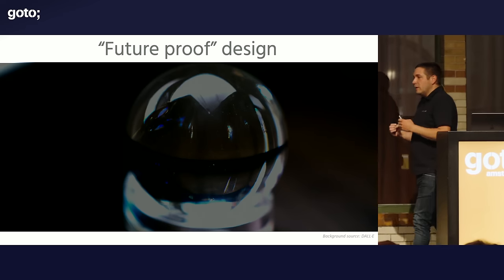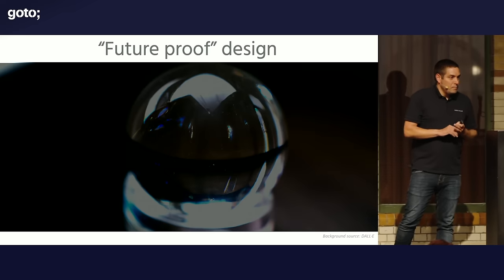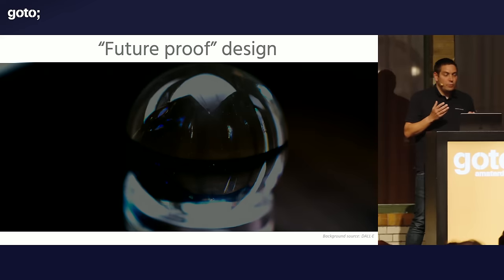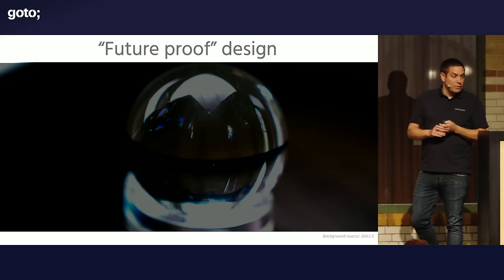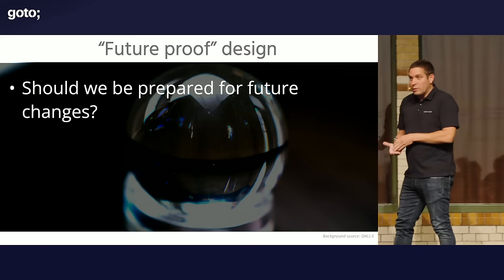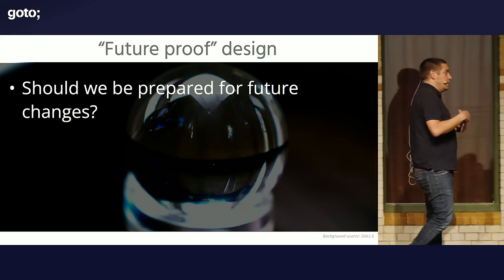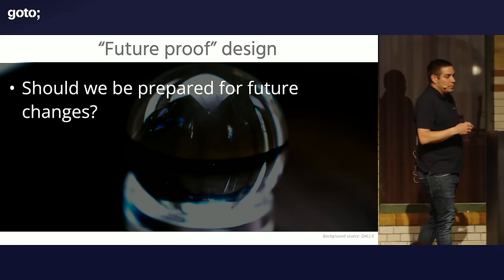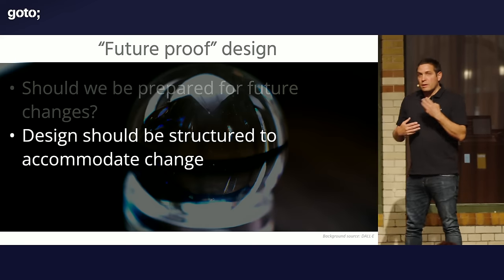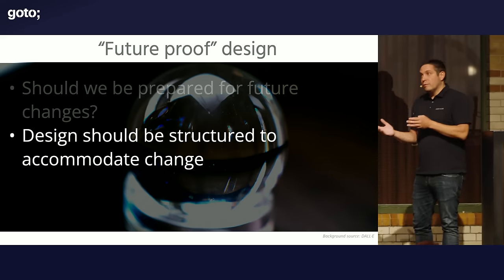We often say that design is about making things future-proof. But isn't it as simple as asking: can we predict the future? Probably we cannot. Should we be prepared for future changes? By all means — the nature of software is that it should be easy to change. But it's clear we cannot predict any changes that are coming. We can either prepare by making everything really generic and adaptable, or think about how to design things so we can accommodate change. How do you make code easy to change? Write really simple code, because simple code is easy to understand and therefore easy to change.